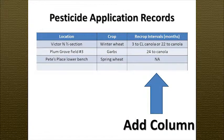I would suggest considering adding a column for recrop intervals, where you can record the recrop restrictions to the various crops you might have in your rotation. You'd list the location, the crop planted, and what the rotation restriction is to different crops. Some of these products have rotation restrictions for three years or more, so you have to keep track for a fairly long time.